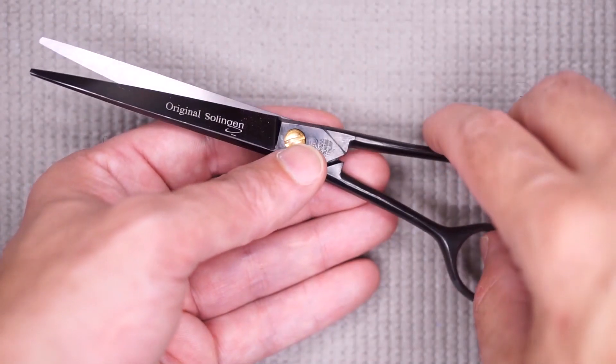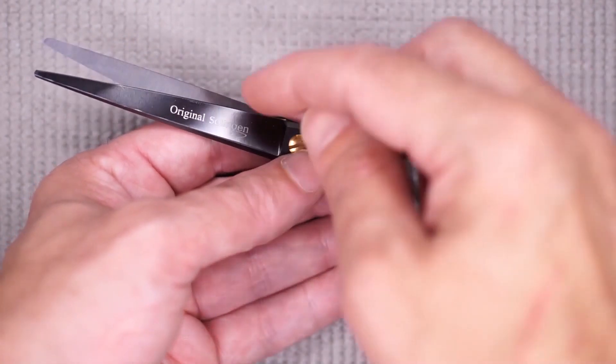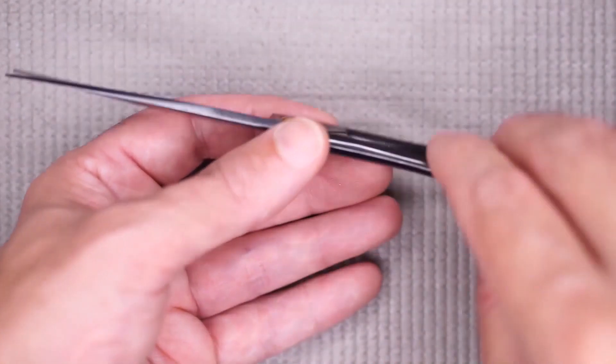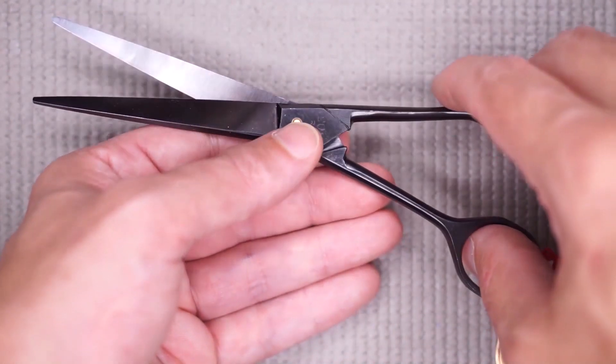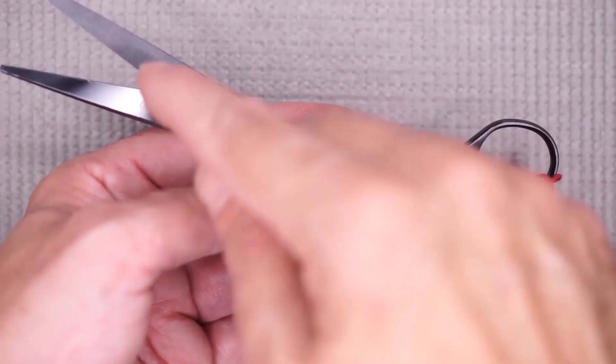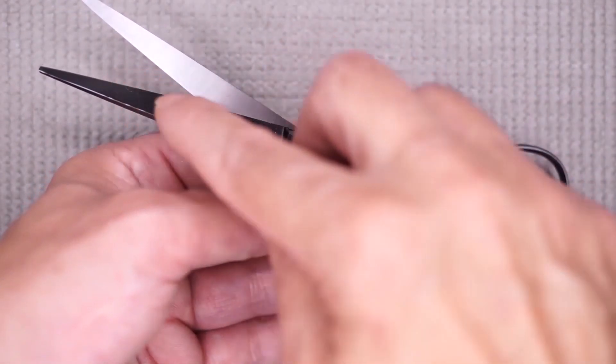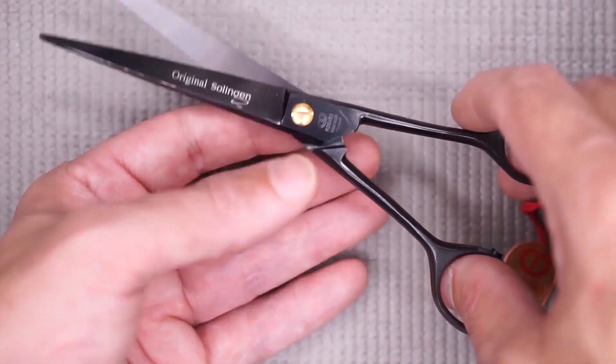This is a classic German hollow grind style, meaning that the insides of the blades are very nicely hollow ground. The bottom blade has micro serration, and the top blade is the razor type edge.